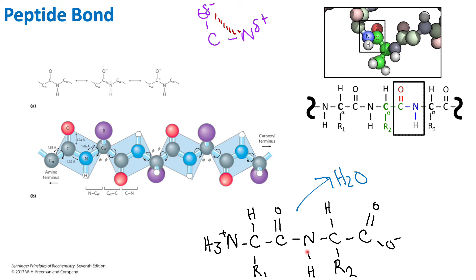If we form the double bond at the carbon-nitrogen position, that bond is sp2 hybridized. This carbon is sp2 hybridized because it is forming bonds with three different atoms. sp2 hybridization means the bond is planar, so the peptide bond is a planar bond. A planar sp2 hybridized bond restricts rotation, so we will not see rotation about the peptide bond, but we will see rotation about the alpha carbons.